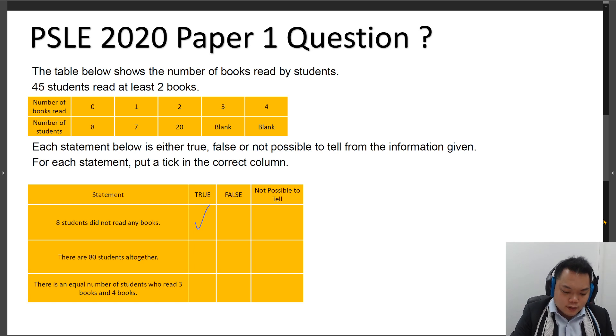Now the second statement says that there are 80 students altogether. True, false, or not possible to tell. So when you have logical reasoning problems like these, you have to read through the background information, context of the situation carefully first.